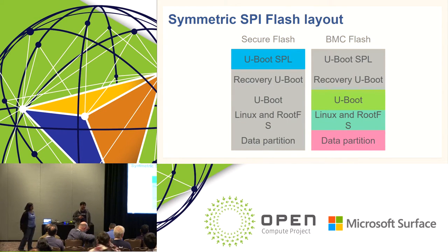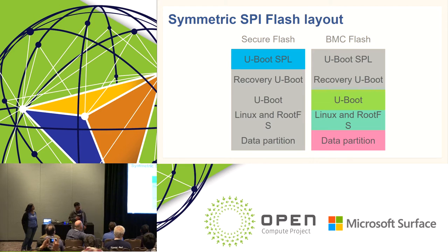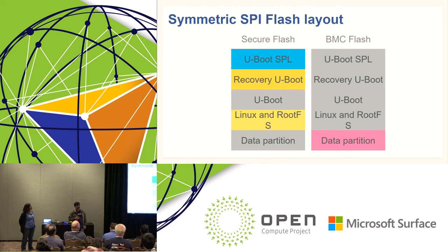Since we now have two flash devices, we don't want to maintain two different spare parts in the data center — that creates confusion. Instead, we use a symmetric layout for both flash devices. The secure flash and BMC flash both have the same binary code; you can just swap them — it doesn't matter. In the typical scenario, when the system reboots, the U-boot SPL runs first, checks the keys and U-boot, then passes control. U-boot checks the root file system and Linux, and only when verification passes does it boot into Linux. Otherwise it falls back to the recovery U-boot. In case of failures, the SPL automatically goes to the recovery U-boot and boots the recovery Linux root file system.